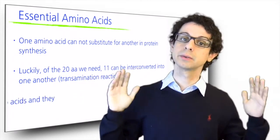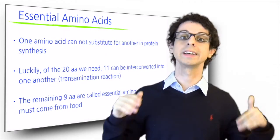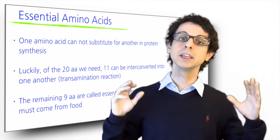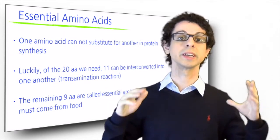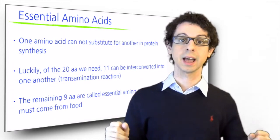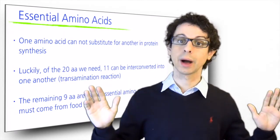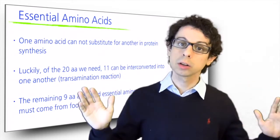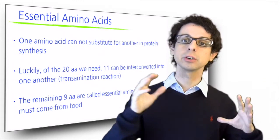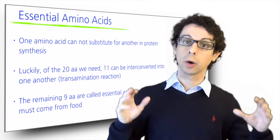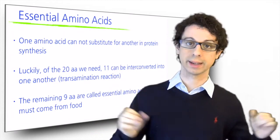However, we cannot do that with the remaining nine amino acids, which for this reason are called essential. Remember that in nutrition, the word essential refers to nutrients that we cannot build ourselves, and it has nothing to do with importance. All the 20 amino acids are vital, and we need all of them to survive. But nine of them cannot be interconverted in our body or made starting from something else, and so they must come directly from food.